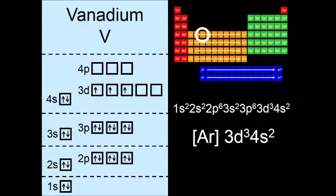So argon 3d3 4s2. Now both chromium and copper are going to be exceptions to what you might expect as far as the official rule for filling in electrons. And that's okay.